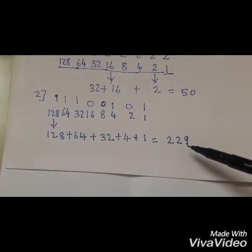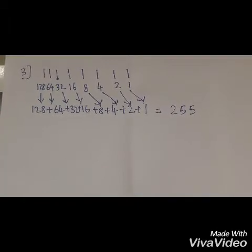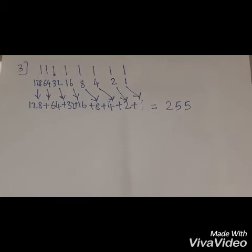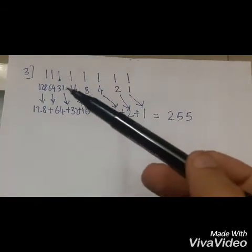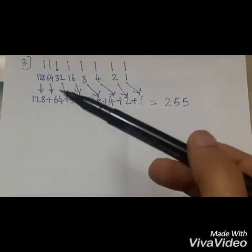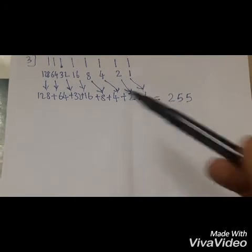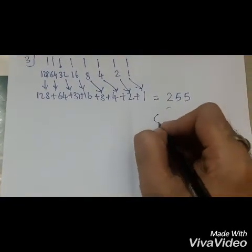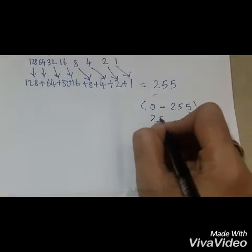The overall addition gives us 229, so that is our decimal number. The third example is 1 1 1 1 1 1 1 1 — all ones. The weights are 1, 2, 4, 8, 16, 32, 64, 128. Since all bits are 1, we simply add all: 128 plus 64 plus 32 plus 16 plus 8 plus 4 plus 2 plus 1, which gives 255. This is the highest number, so the range is 0 to 255, giving us 256 total values.